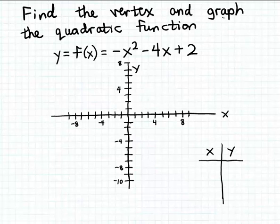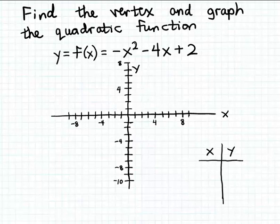In this example we want to find the vertex and graph the quadratic function y = f(x) = -x² - 4x + 2. We know this is a quadratic function because the formula fits the format for quadratic functions — specifically, the input variable x is squared, which is characteristic of quadratic functions.